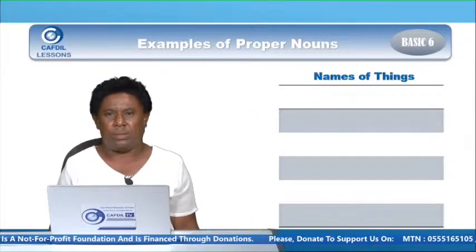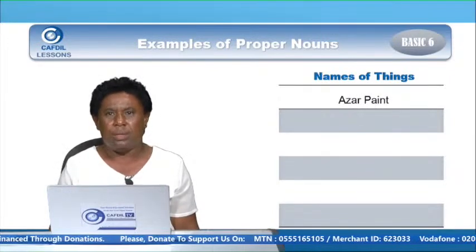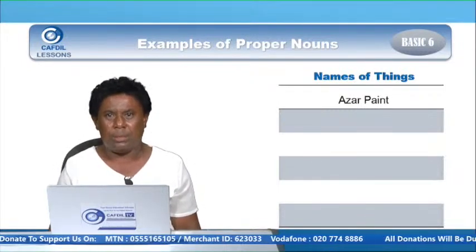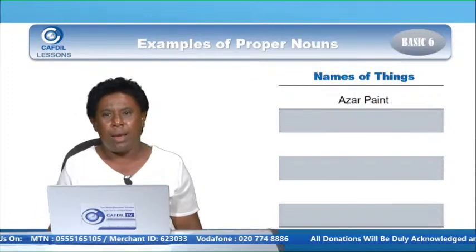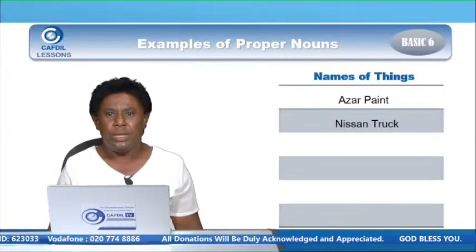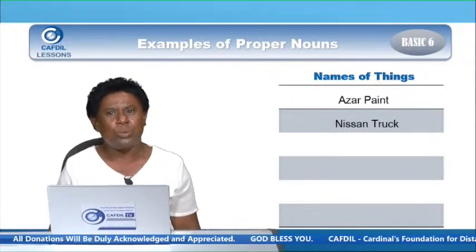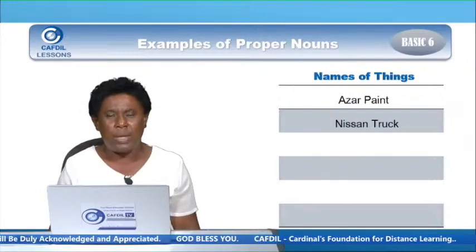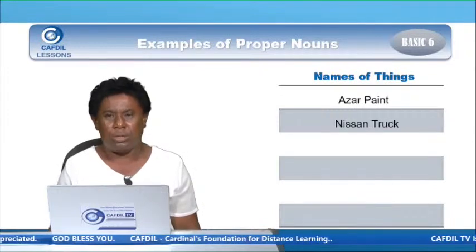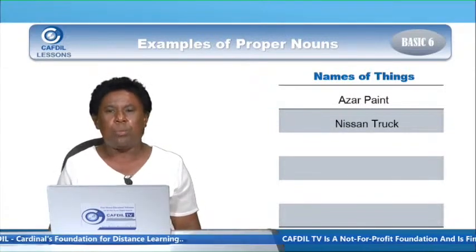We have names of things. Like Azar paint — there are a lot of paints, but this particular one has a name: Azar paint. It starts with capital A for Azar, capital P for paint, because it's a proper noun. Nissan truck — it's a type of thing, a car. There are a lot of trucks, but this one is Nissan truck, a particular name given to that truck. It starts with capital N for Nissan, capital T for truck, and it's a proper noun.